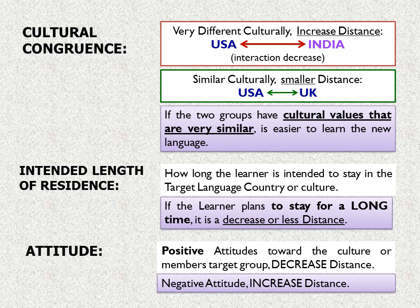The sixth social factor is cultural congruence. Being very different culturally increases the distance — for example, between the cultures of the USA and India there are many differences, so interaction is harder. But when two countries are culturally similar, the distance is smaller and better for language learning. For example, between the USA and the United Kingdom there are more similarities, so if two groups share similar cultural values, it is easier to learn the language.